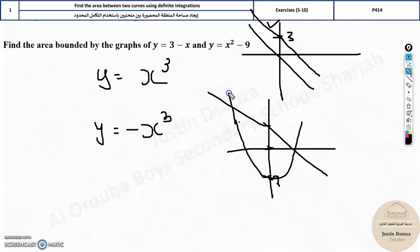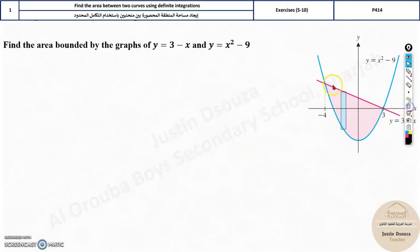From the basic knowledge of graph, it'll intersect here and somewhere here. I have no idea, but we have methods to solve for it. This would be the graph, somewhat like this. You can see the graph, it does not match accurately, but approximately I could draw them. The upper function is 3 minus x, whereas the lower function is x squared minus 9.